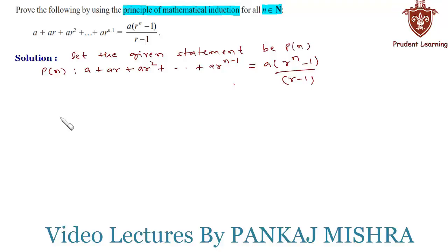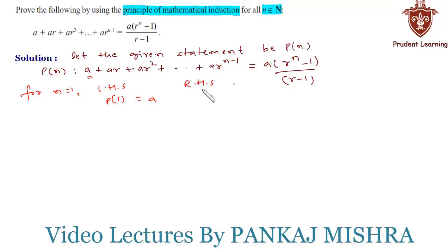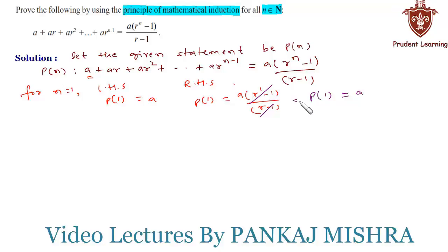In the first step, we check whether the given equation is true for n equal to 1. For n equal to 1, on the left hand side we have P(1) equal to a, whereas on the right hand side we have a times r raised to 1 minus 1 upon r minus 1. Cancelling r minus 1 from numerator and denominator, we get P(1) equal to a. Since both sides are equal, P(1) is true.